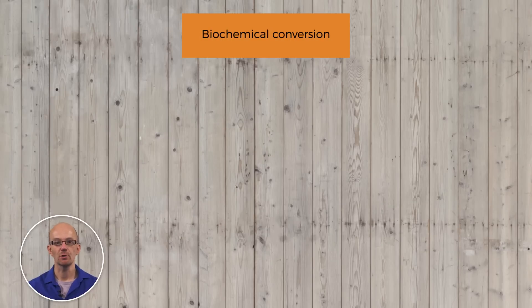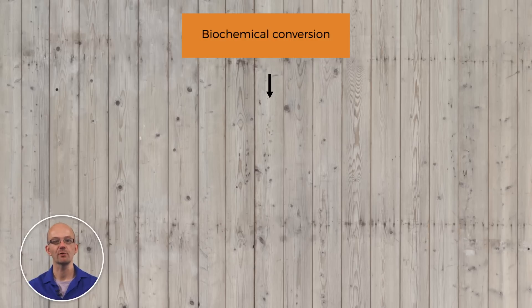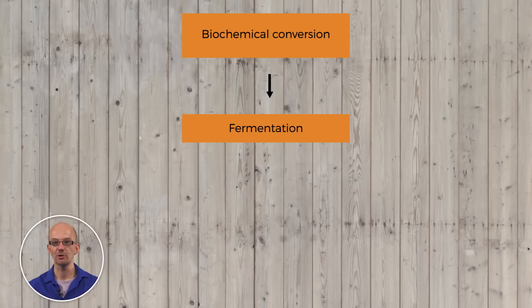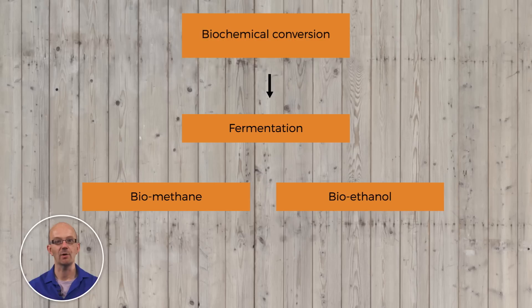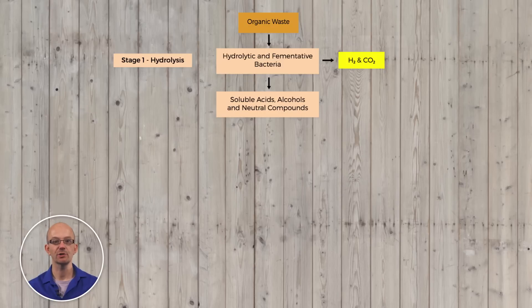Biochemical processes occur at mild conditions such as lower temperature and pressure, using microorganisms or enzymes. A typical example of a biochemical conversion is fermentation. Fermentation is an anaerobic microbiological conversion process that produces either biomethane or classical bioethanol. In the first stage of microbioconversion, complex organic molecules are broken down into simple sugars, amino acids and fatty acids.